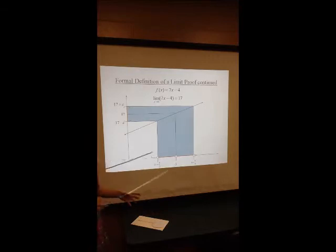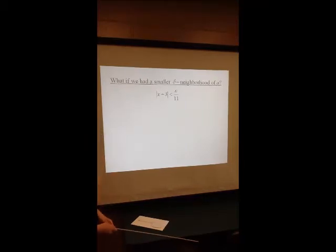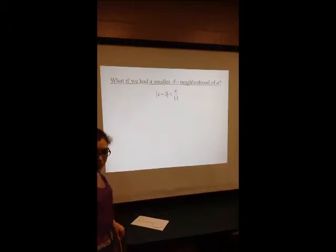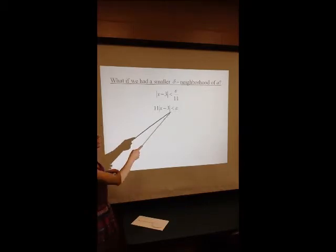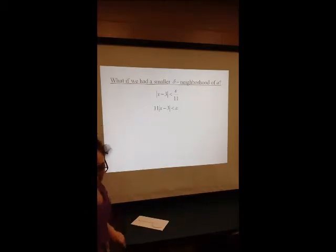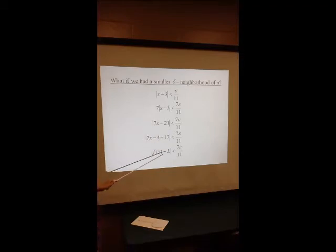For example, what if delta equals epsilon over 11, which is smaller than epsilon over 7? We're going to work forwards from our delta-neighborhood and try to find our epsilon-neighborhood. We begin by multiplying both sides by 11, but if we distribute this 11 we'll have 11x, which is difficult to change into 7x — which we need for this to equal f of x minus L. So instead, we multiply both sides by 7. Once we distribute the 7, we can have this expression mimic f of x minus L, and we end up with a 7 epsilon over 11 neighborhood of L.